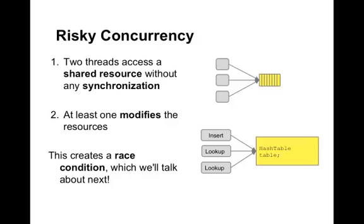What about risky concurrency? If multiple threads access a shared variable without any rules — like a bathroom with no lock — we have a problem. We also have to worry when at least one thread modifies the resource. For example, if one thread inserts into a hash table while others are looking up, they might see an invalid or null pointer and crash. We call this a race condition: two threads accessing the same data without rules for access.